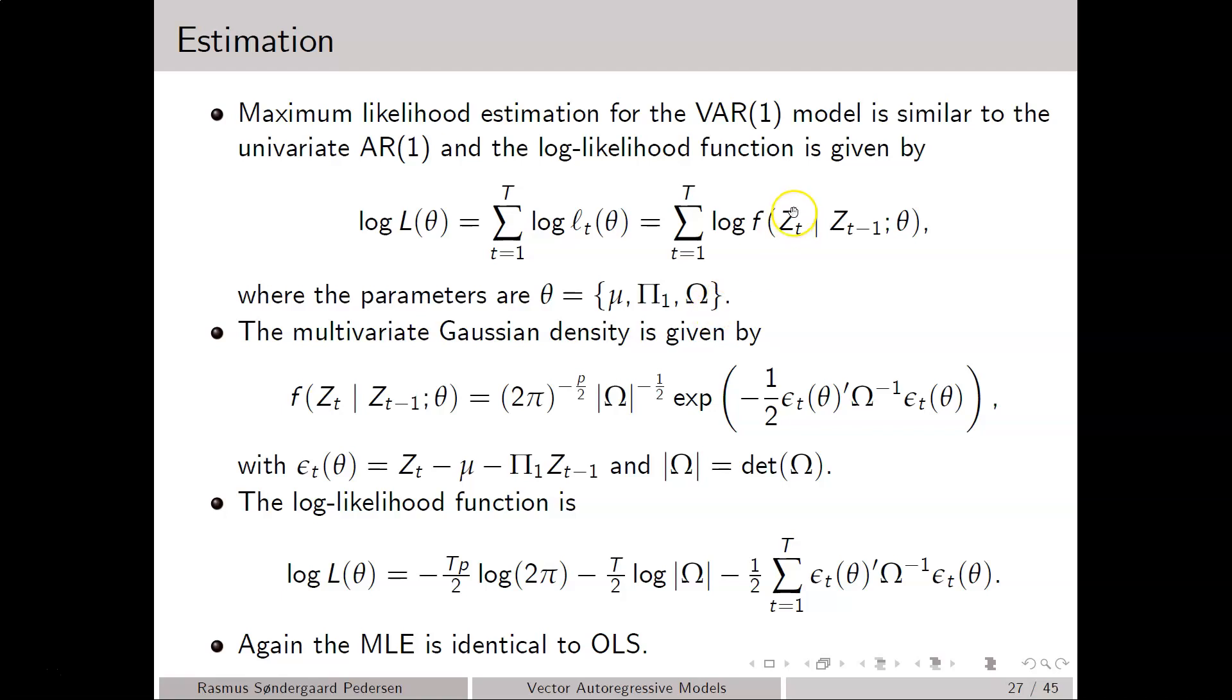The conditional density of Z_T given Z_{T-1} is based on the multivariate Gaussian density, under the assumption that the error term is normally distributed. This conditional density looks as follows here, where the epsilon_T's are functions of the model parameters and given by Z_T minus its conditional mean.